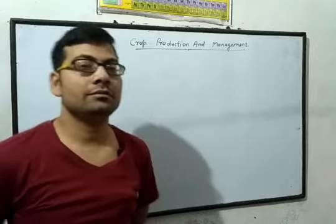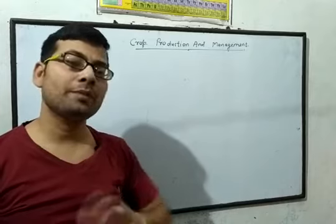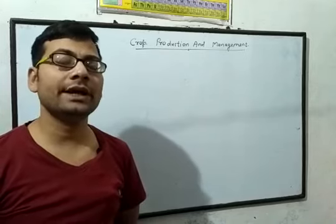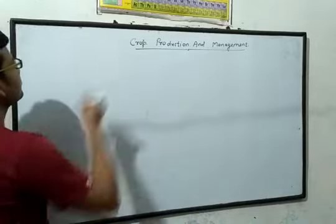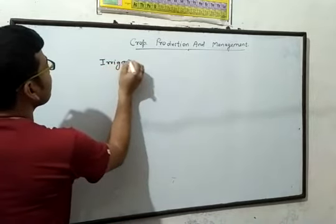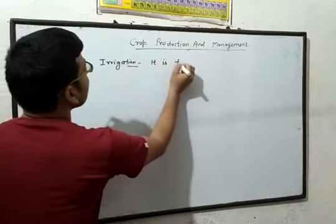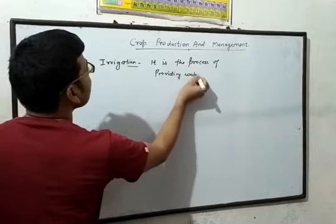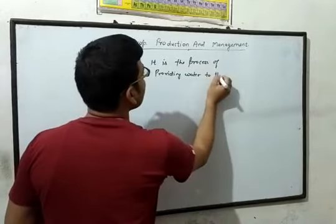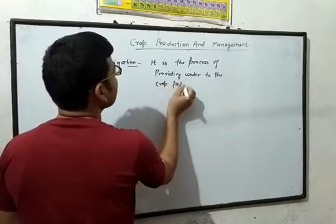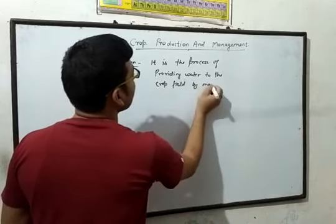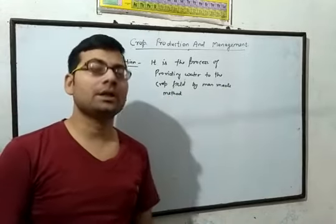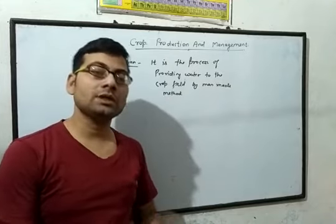Here we discuss about irrigation. When farmers prepare the fields, they will need irrigation. So what is irrigation? It is the process of providing water to the crop field and crop plants, which is the process of irrigation.